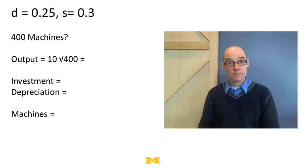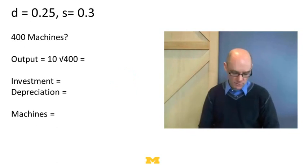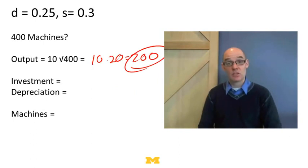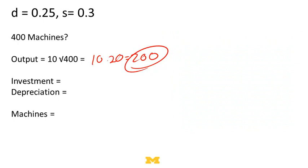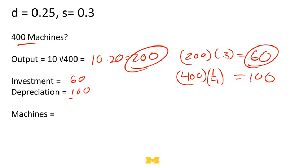To understand whether growth would stop, let's assume a really big number of machines and see what happens. Suppose we have 400 machines. Output is 10 × √400 = 10 × 20 = 200. Investment: savings rate 0.3 × 200 = 60 new machines. But depreciation is 400 × 0.25 = 100 machines lost. So we're investing 60 but losing 100 — that's minus 40. Starting with 400 machines, we'd fall back down to 360.